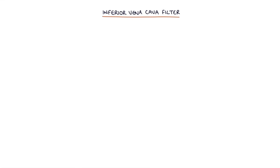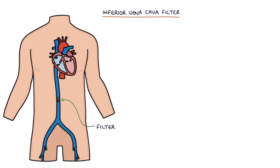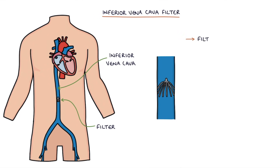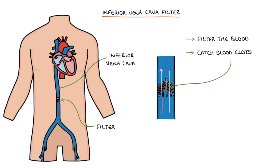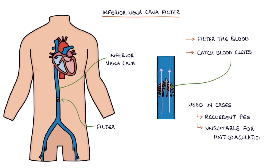Next, let's talk about inferior vena cava filters. These are devices inserted into the inferior vena cava designed to filter the blood and catch any blood clots travelling from the venous system towards the heart and lungs. They act as a sieve, allowing blood to flow through while stopping larger clots. They are used in unusual cases of patients with recurrent PEs or in patients unsuitable for anticoagulation.